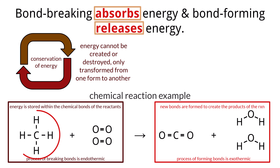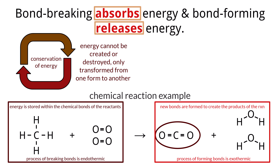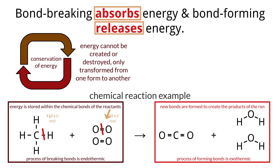For example, in the combustion of methane — CH4 + 2O2 → CO2 + 2H2O — energy is absorbed to break the C–H bonds in methane (approximately 414 kJ/mol) and the O=O bonds in oxygen (approximately 498 kJ/mol). As the reaction transitions to product formation, energy is released when new C=O bonds in carbon dioxide form (approximately 804 kJ/mol) and O–H bonds in water are formed (approximately 463 kJ/mol).